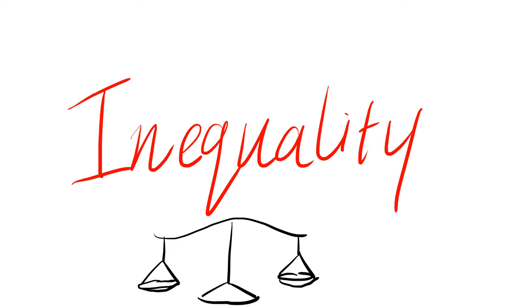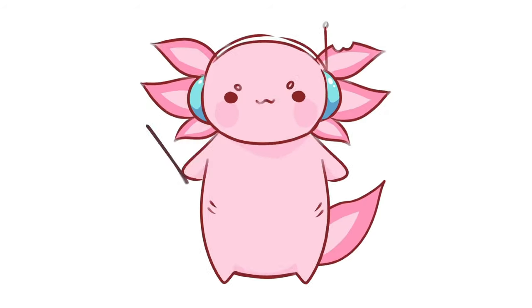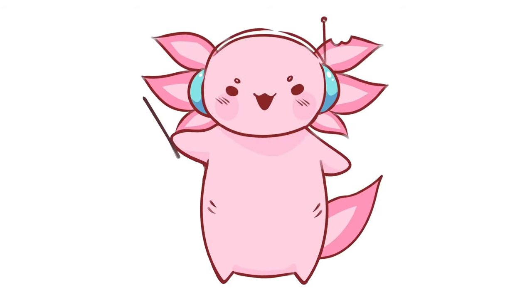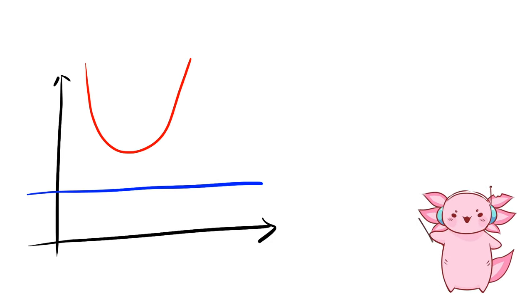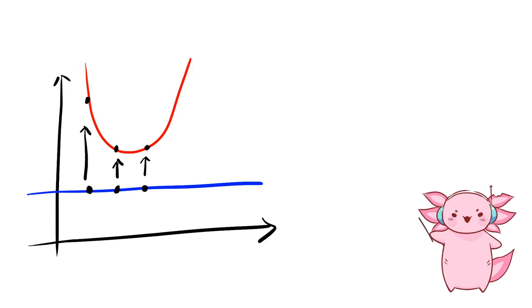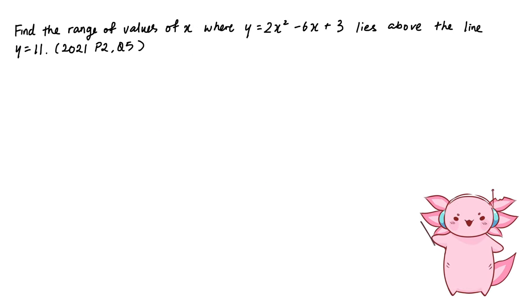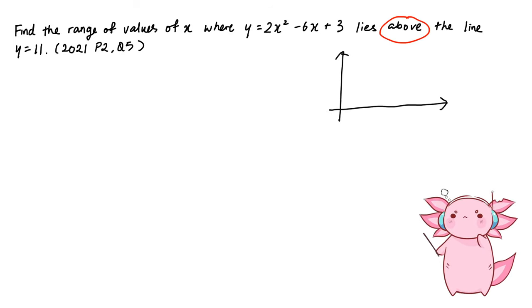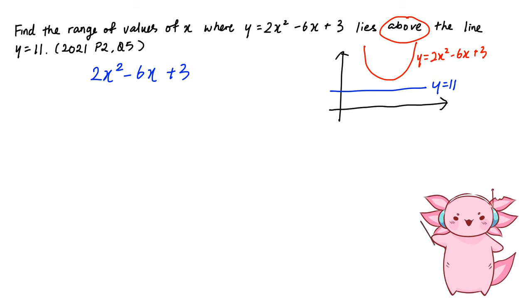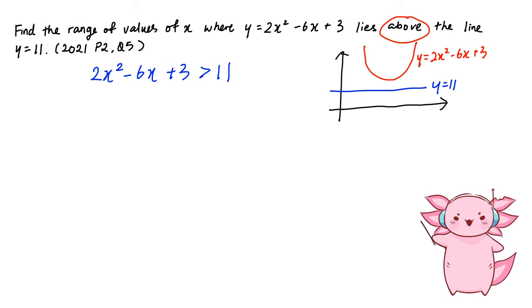Next is the topic on inequalities, which will teach you step by step on how to become a social justice warrior. So let's take a look at these two curves. We notice that every point on the red curve lies above the blue line, so we can say that the red equation is greater than the blue equation. Since the first equation lies above the second equation, it means that 2x² − 6x + 3 is greater than 11.